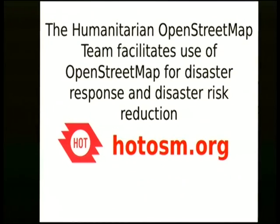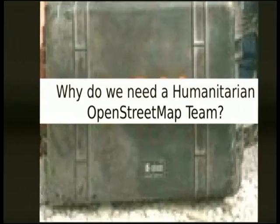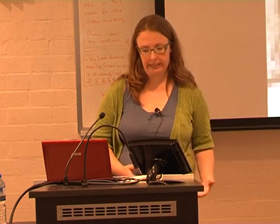HOT, the organization I work for, specifically uses OpenStreetMap — this open data — for disaster response and disaster risk reduction. Same reason: data is very expensive, or sometimes doesn't exist. In the majority of the places we work, there isn't a really good detailed map you can use for planning.